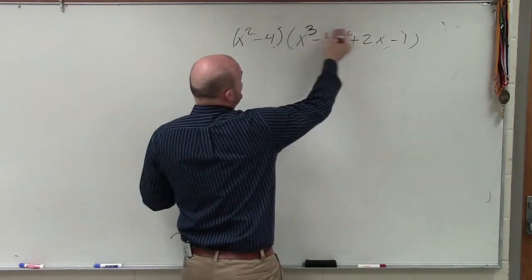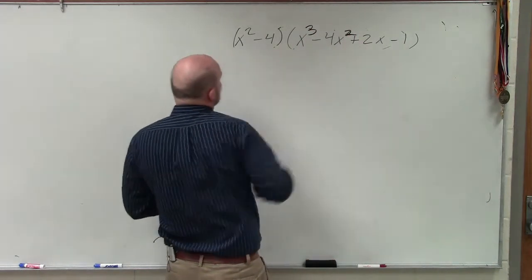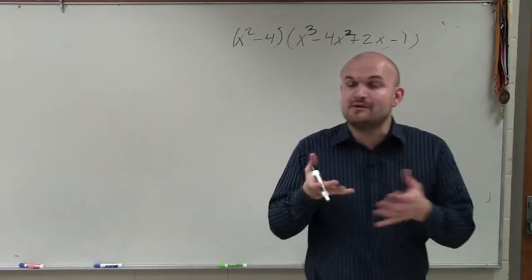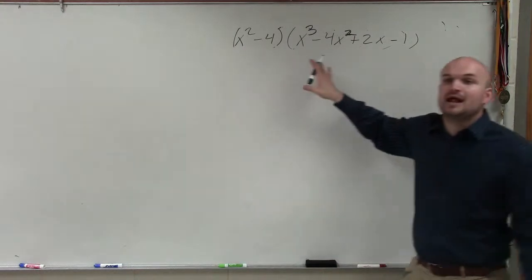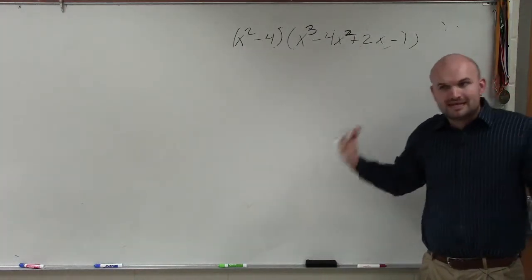So what my recommendation is, is to use, well, FOIL works when you have a binomial times a binomial. But in this case, we have a binomial times a polynomial to the fourth power. So we can't use FOIL.